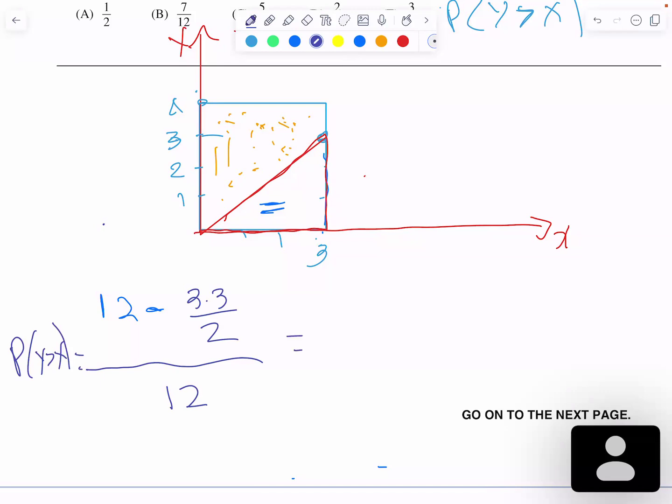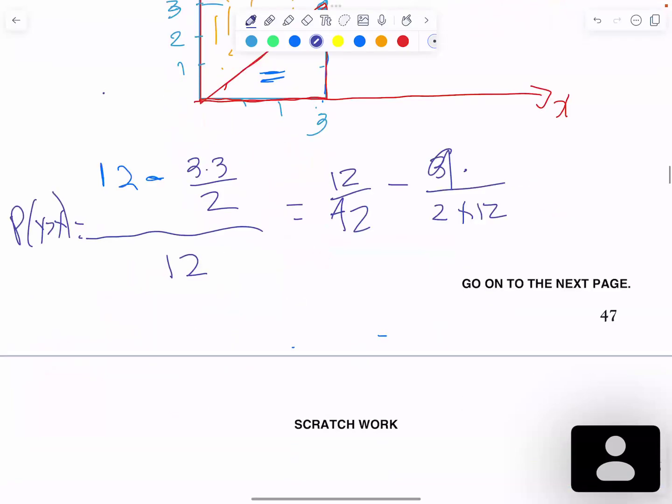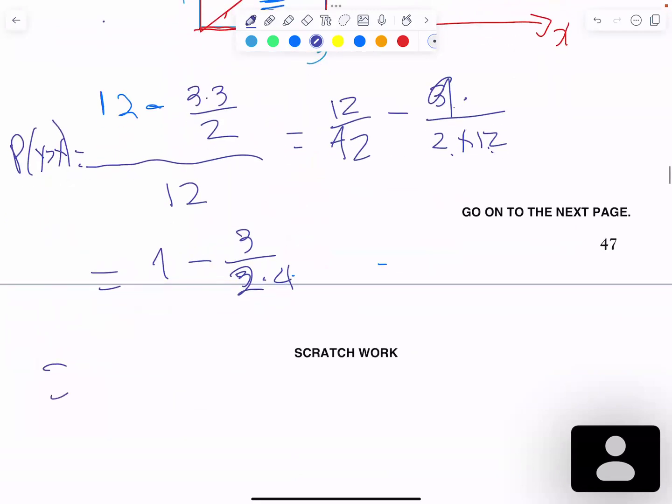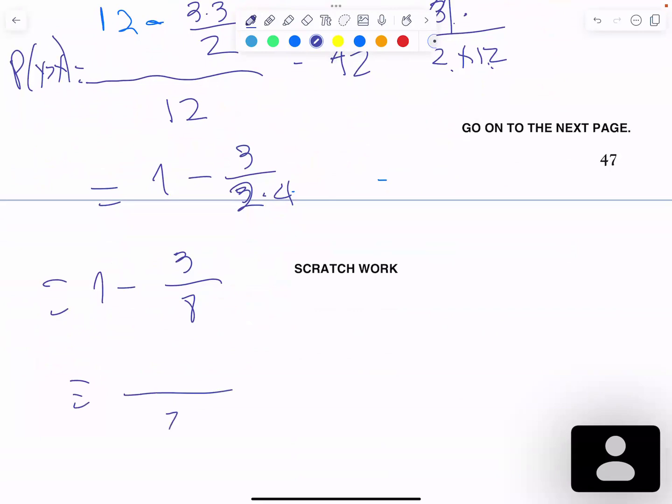I'm going to put 12 at the bottom of everything, and then we have 12 divided by 12 minus 3 times 3, which is 9 divided by 2 times 12. And then it's going to be 1 minus 9 divided by 3 and 12 divided by 3, which is 4, I mean 2 times 4. And now we have 1 minus 3 over 8 equals 8 minus 3, which is 5 over 8.